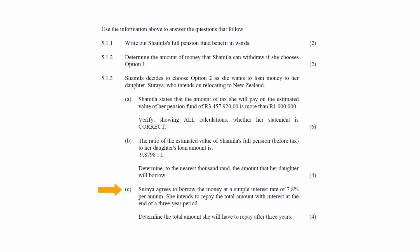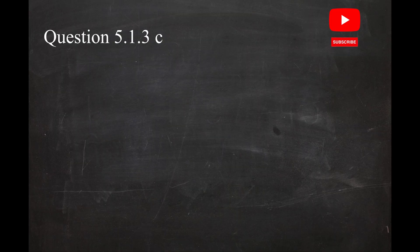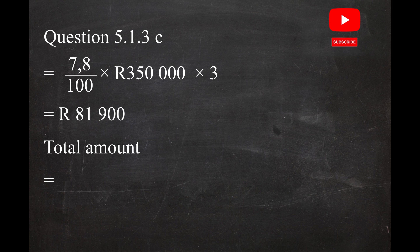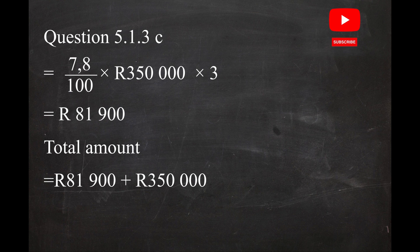In Question 5.1.3c, Suraya, the daughter, agrees to borrow the money at a simple interest rate of 7.8% per annum and intends to repay the total amount with interest at the end of a three-year period. The interest over three years equals 7.8/100 × R350,000 × 3, which equals R81,900. The total amount to repay is R81,900 plus R350,000, equalling R431,900.